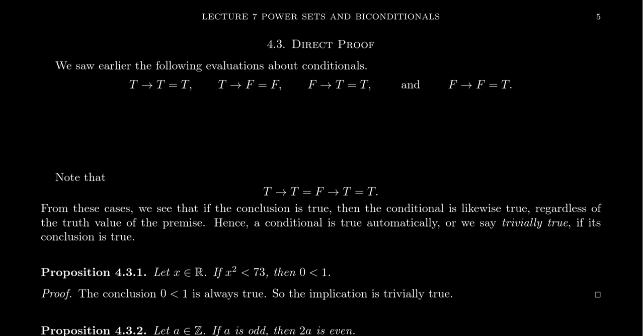Your premise can be true and your conclusion can be true — that makes the conditional a true statement. It could be that your premise is true and your conclusion is false — that makes it a false conditional statement. This is the only time a conditional can be false, because you have some expectation: if this happens, then this will happen. But it happened, but not the conclusion. That's a false statement.